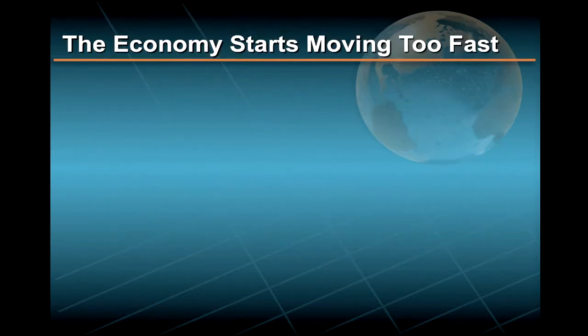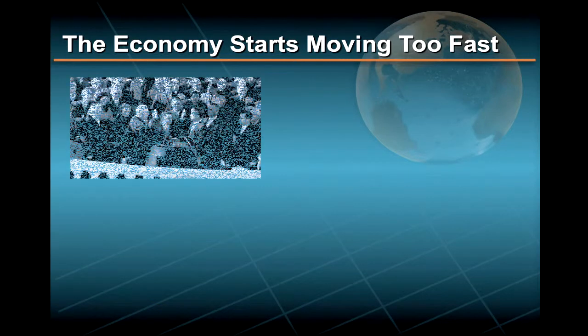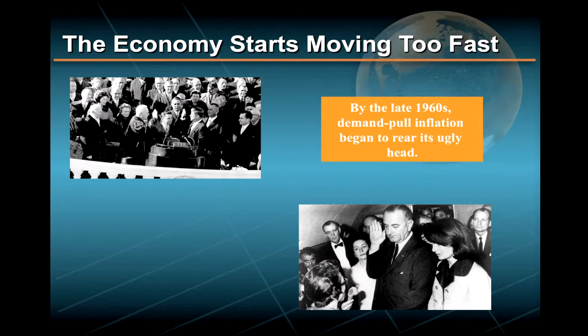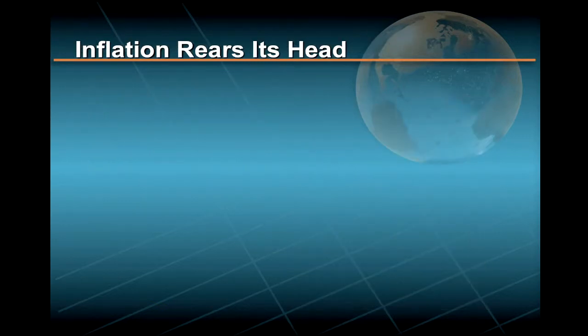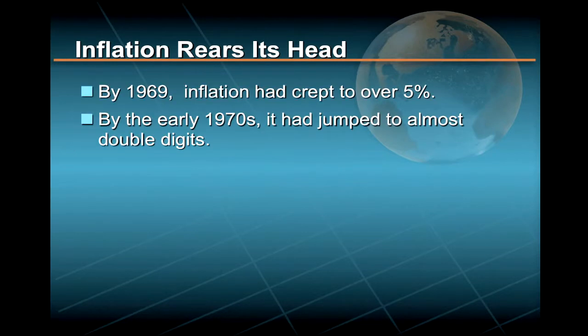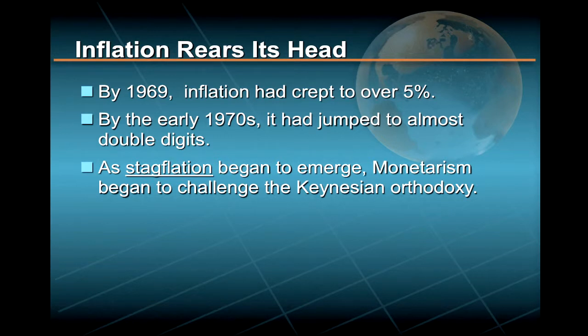Moving again was exactly what the Democratic administrations of first John F. Kennedy and then Lyndon Johnson did to the economy. In fact, by the end of the 1960s, the economy was moving so fast that inflation began to rear its ugly head. By 1969, inflation had crept over 5 percent — high for those good old days — and by the early 1970s, it had jumped to almost double digits.